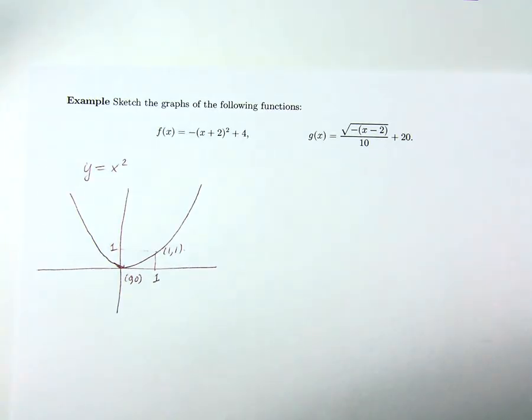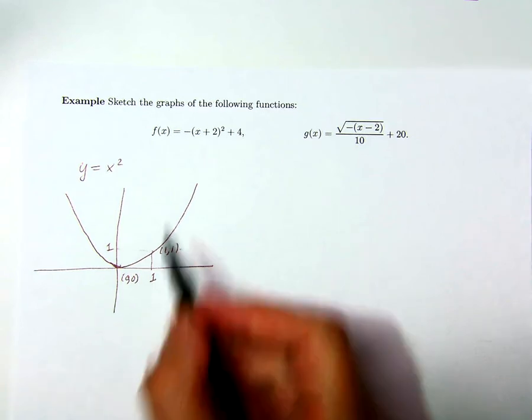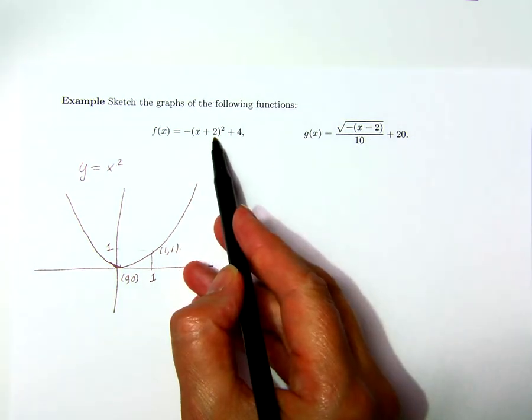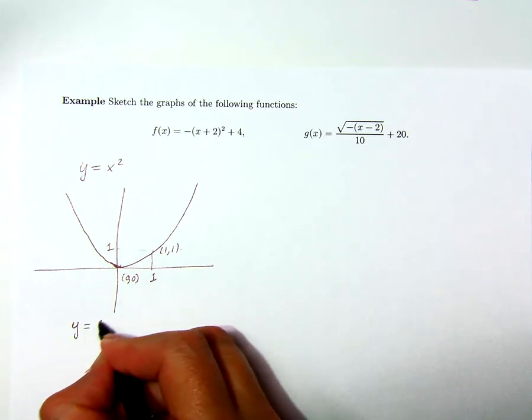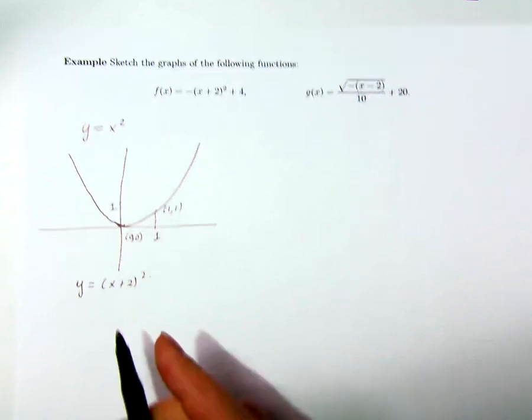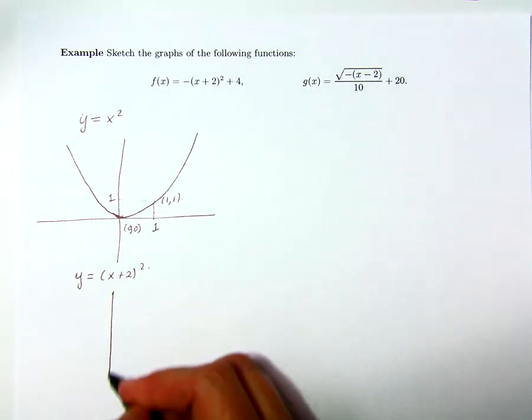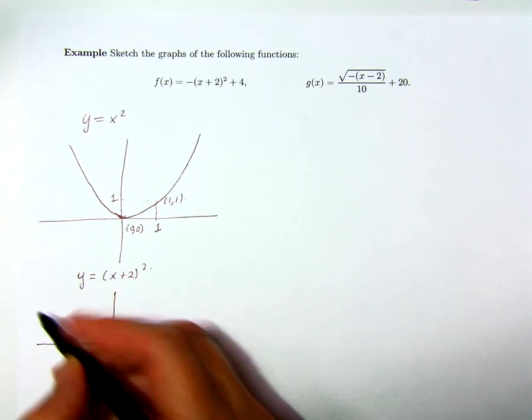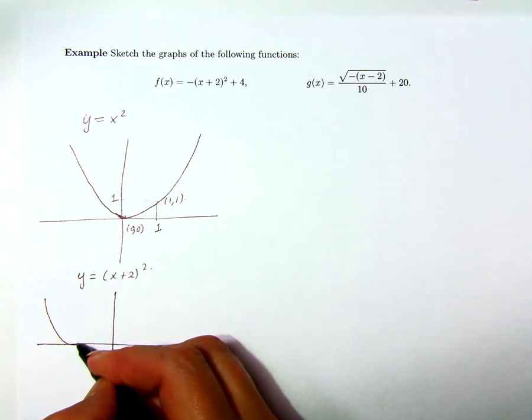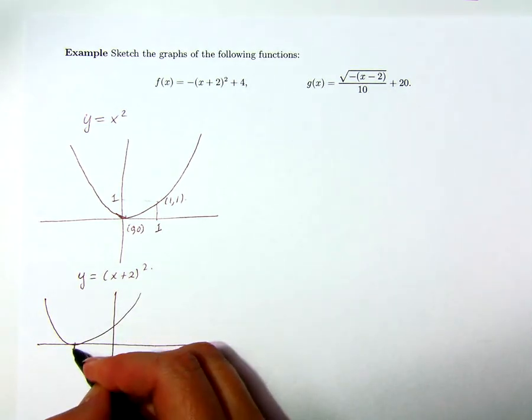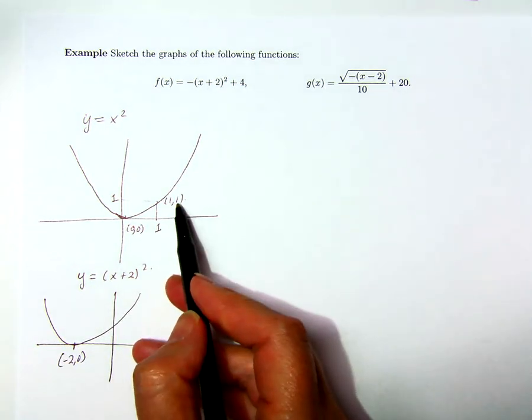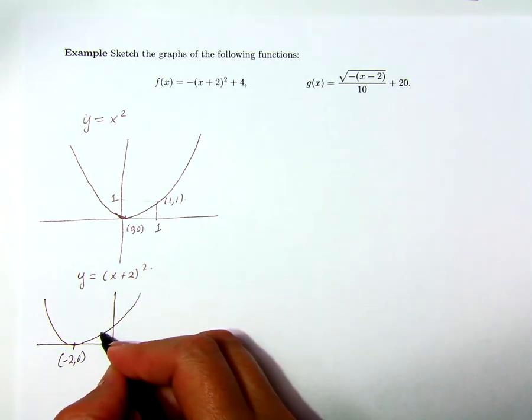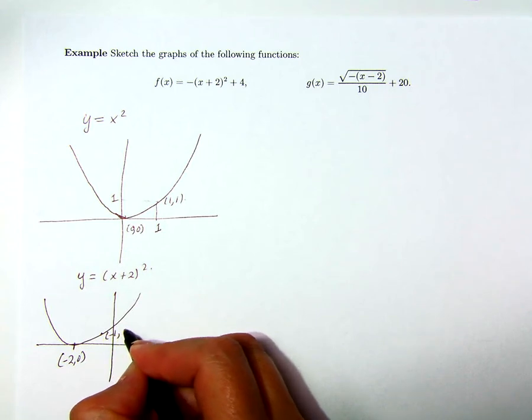The first step I'm going to make is to shift to the left by two units, so get the graph of y equals x plus two squared. This is the graph of this shifted to the left by two units. So now the vertex is at minus two zero, and this point one one has shifted to the left by two units, so that's at minus one one.